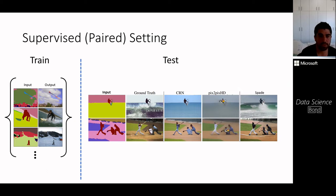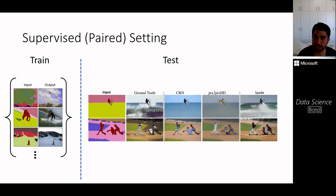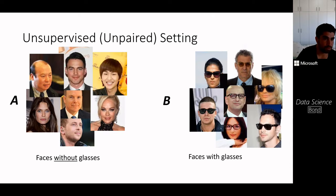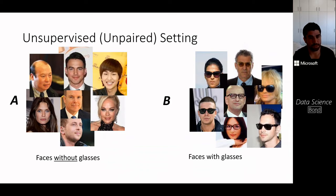At test time, we want to control the structure of objects by providing a different segmentation map and generating an image that corresponds to that segmentation. The supervised setting is very expensive because it requires annotation of segmentation masks.